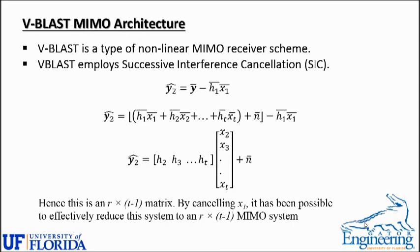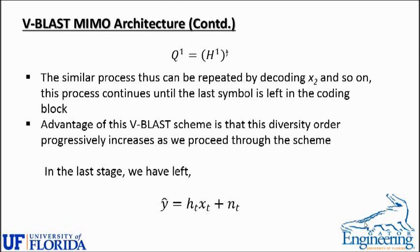In the V-BLAST MIMO architecture, it is a non-linear MIMO receiver scheme because it employs successive interference cancellation, known as SIC. At each step, the interference of one symbol is removed, so at the end of the process we are left with only one signal in its pure form, making it easy to decode. We use the concept of the inverse or pseudo-inverse matrix to deduce the V-BLAST MIMO architecture system. This process is repeated by decoding X2 and so on, continuing until the last symbol is left in the coding block. One advantage of V-BLAST is that the diversity order progressively increases as we proceed, until in the last stage only one signal and one channel matrix remain.